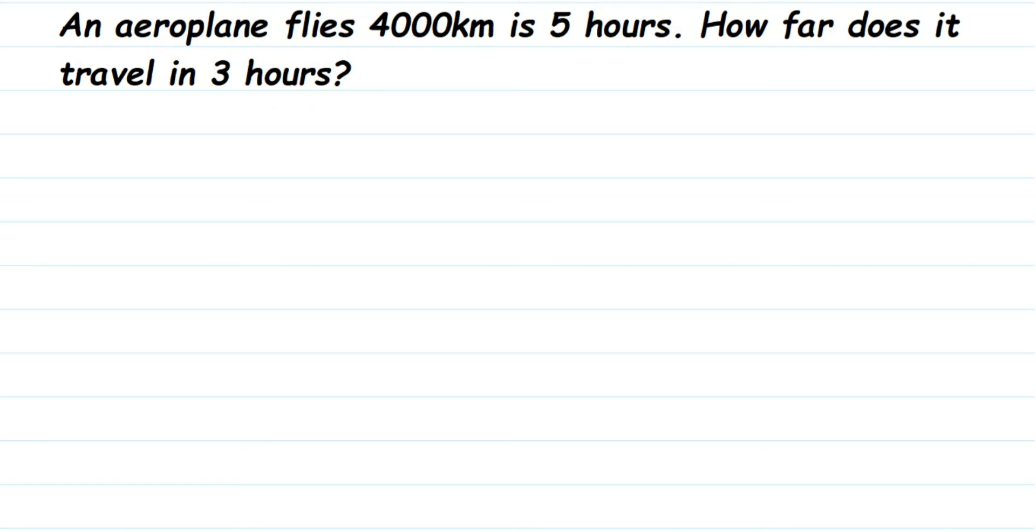They have given that an aeroplane flies 4000 km in 5 hours and they are asking how much distance it travelled in 3 hours. To find this out, if I know how many kilometers it travelled in 1 hour, we have to use the unitary method. We have to first find out how much distance the aeroplane travelled in 1 hour. Once we know this distance, we can find out for 3 hours.